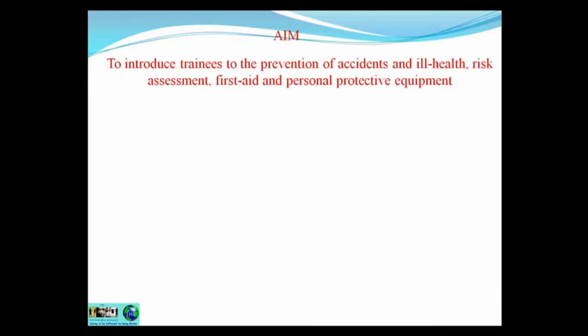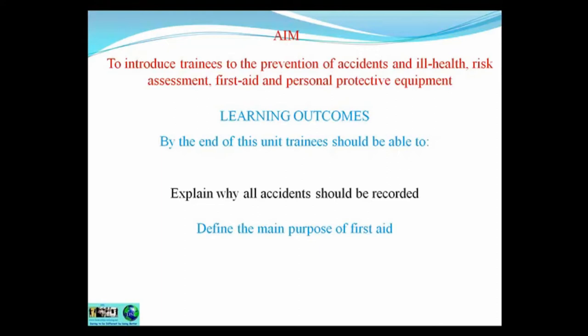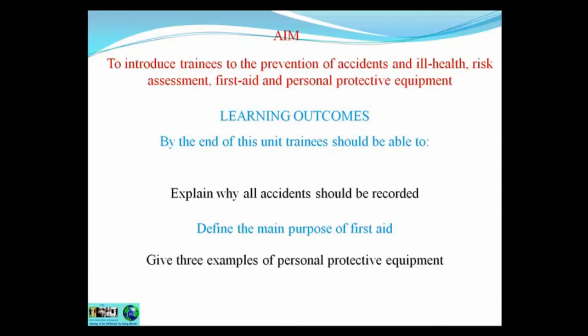Let's have a look at unit 2. The aim of this unit is to introduce you to the prevention of accidents and ill health, risk assessment, first aid and personal protective equipment. By the end of this unit, you should be able to explain why all accidents should be recorded, define the main purpose of first aid, give three examples of personal protective equipment, and define the phrase risk assessment.